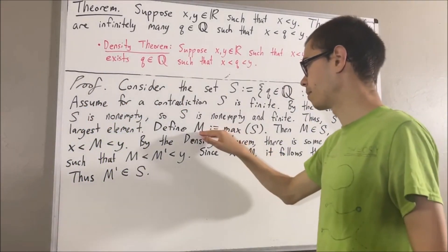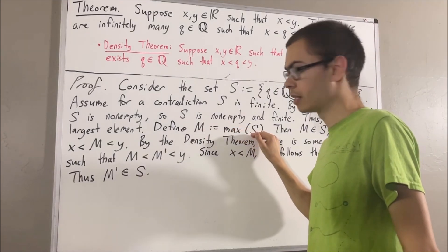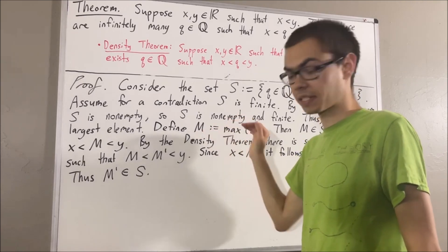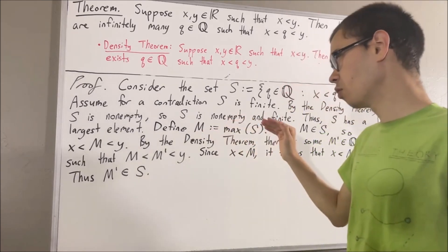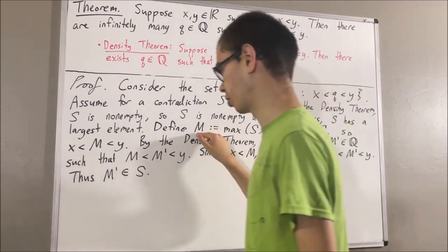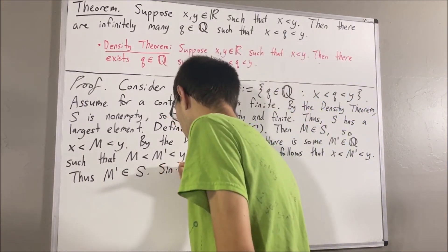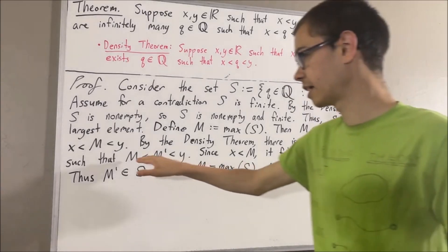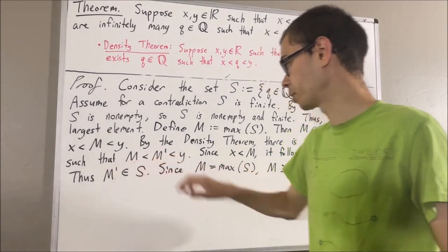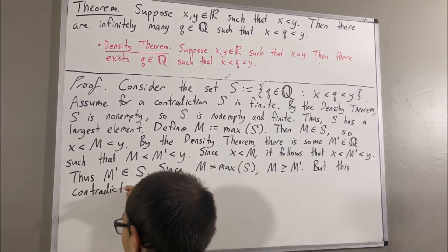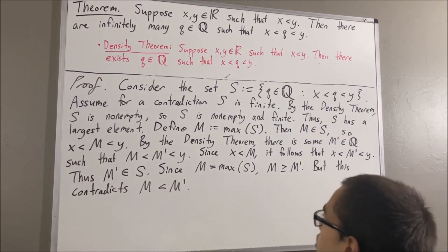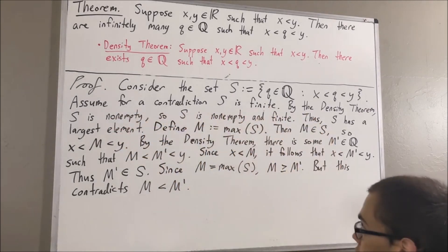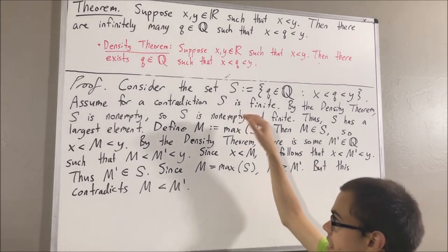But capital M is the largest element of S, which means capital M is greater than or equal to every element in S. So in particular, we must have that capital M is greater than or equal to capital M prime. But this contradicts the fact that capital M is less than capital M prime. So we've reached a contradiction — our assumption that S is finite leads to a contradiction, and we must instead have that S is infinite.